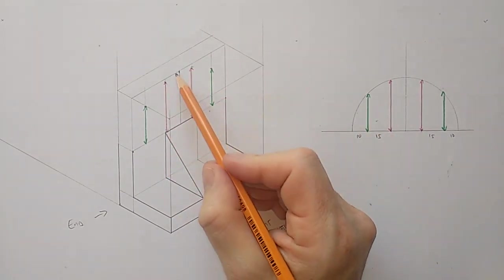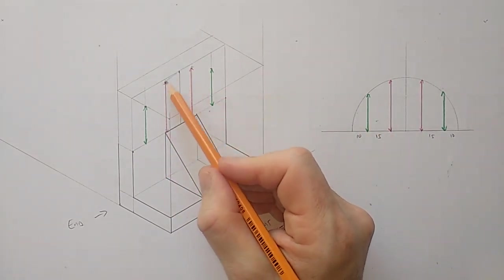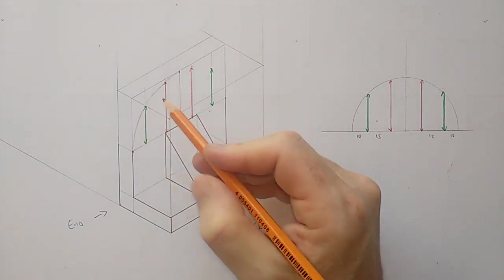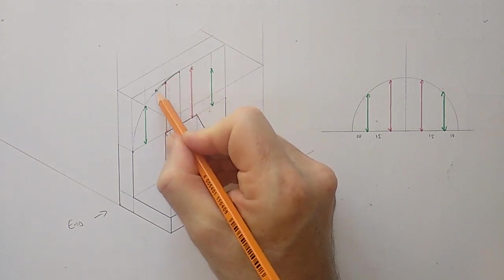So I can just, I will be going nice and light initially. Try to help yourself find the curve. There we go. Once you see the curve, it's easier to go over it a bit heavier.